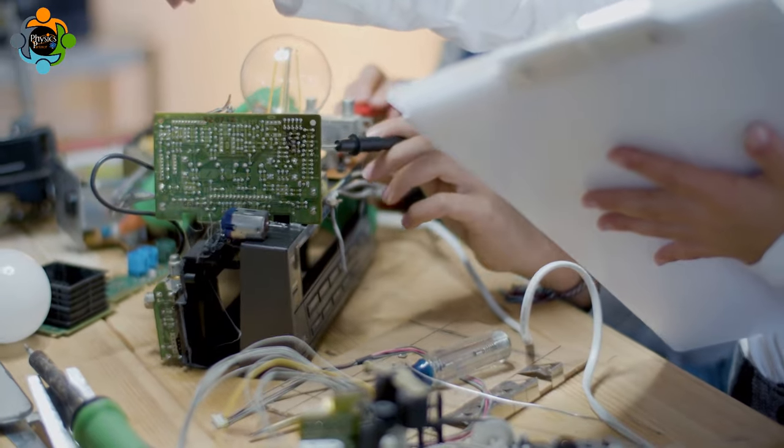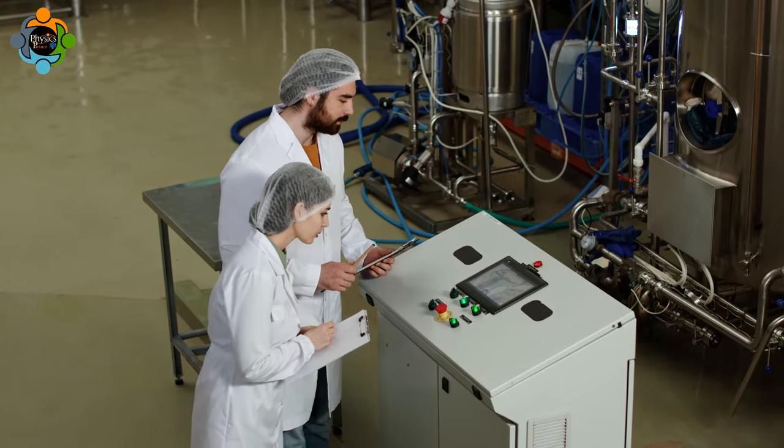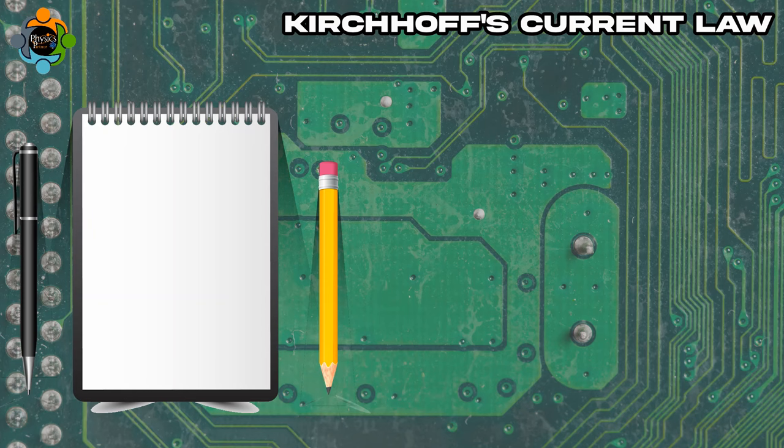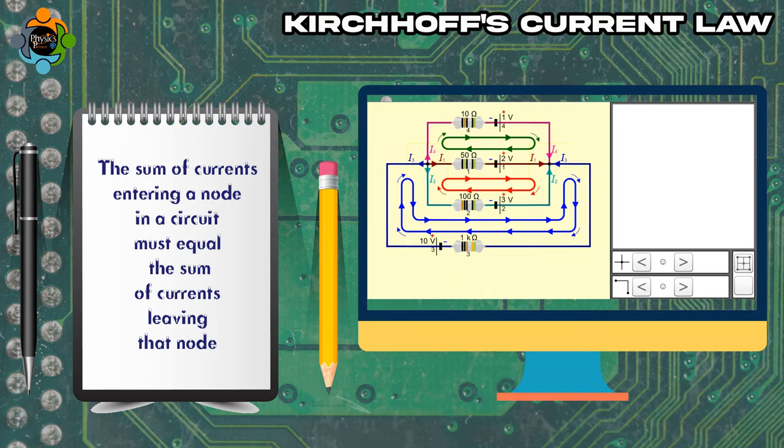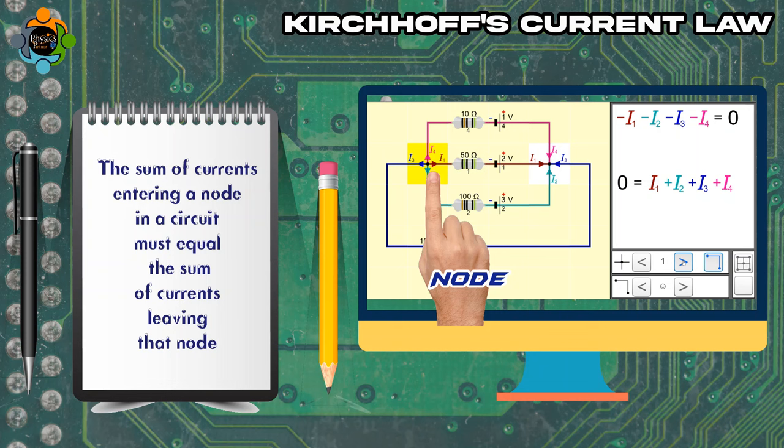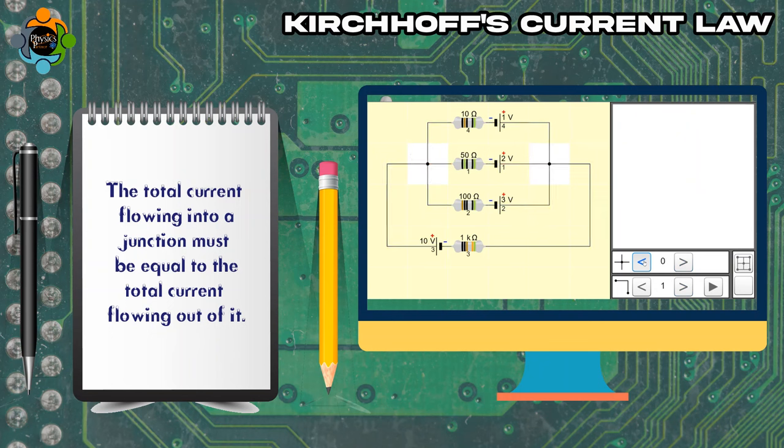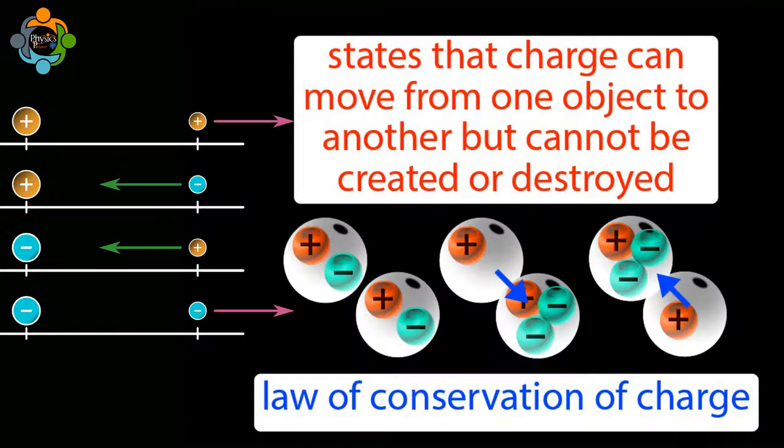These laws laid the foundation for modern circuit analysis and have since become indispensable tools for electrical engineers worldwide. Kirchhoff's current law states that the sum of currents entering a node in a circuit must equal the sum of currents leaving that node. In other words, the total current flowing into a junction must be equal to the total current flowing out of it.